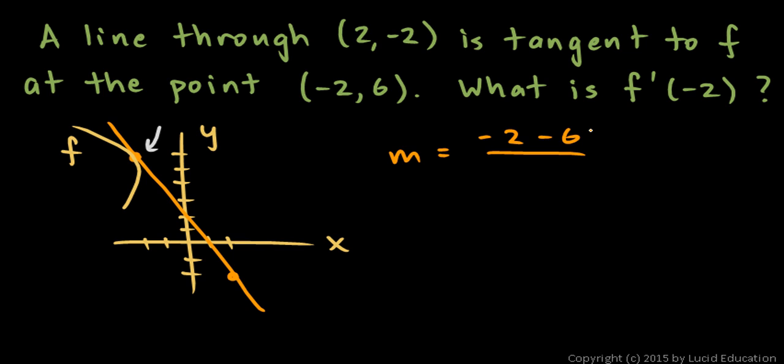over x₂ minus x₁, that's 2 minus (-2). So that's -8 over 4, which is -2.